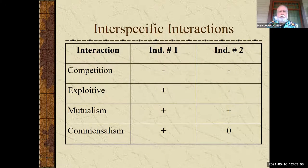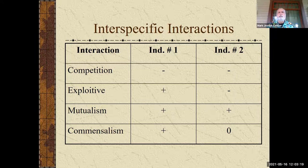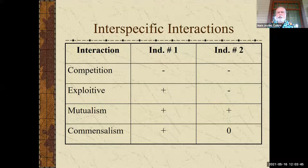I put together a table, and this table may differ from what you see out there. What we want you to do is think about the interactions that two individuals can have. If you see a plus in the square, that means that individual is benefiting from this interaction. If you see a minus, it means it's losing something in this interaction. And if you see a zero, it is not affected by the interaction.